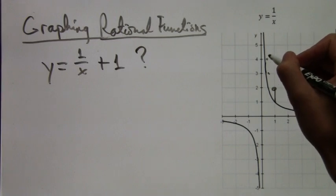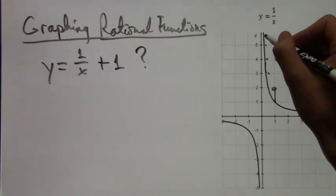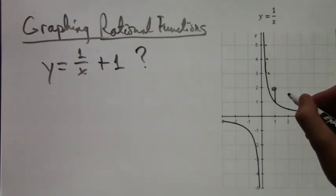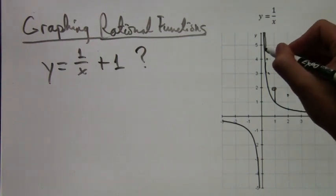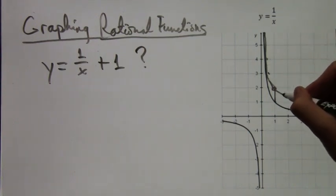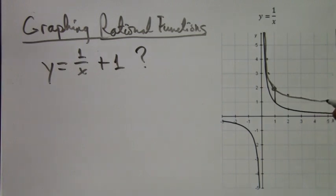So if you have a related function to y equals 1 over x, that is y equals 1 over x plus 1, what we get is just all the points shifted up 1. So this is what the graph would look like of y equals 1 over x plus 1.